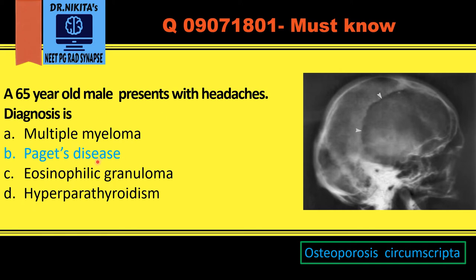The diagnosis is Paget's disease. This is indicative of the early lytic phase of Paget's disease. When Paget's goes into the lytic and blastic phase, we see the cotton wool appearance of the skull — cotton wool because of the sclerotic lesions in the blastic phase.